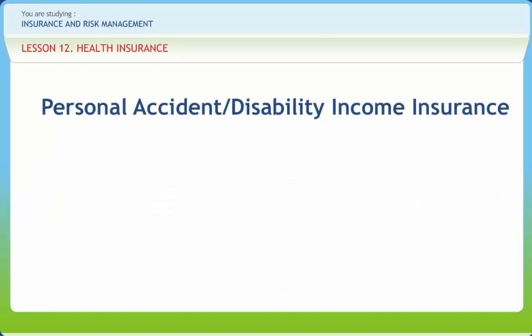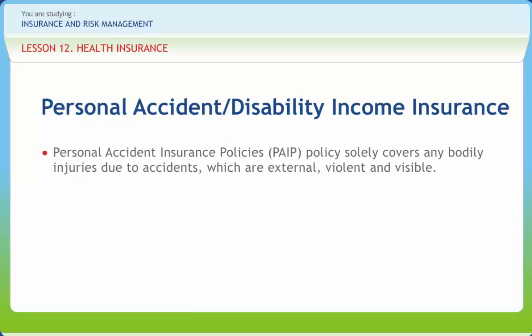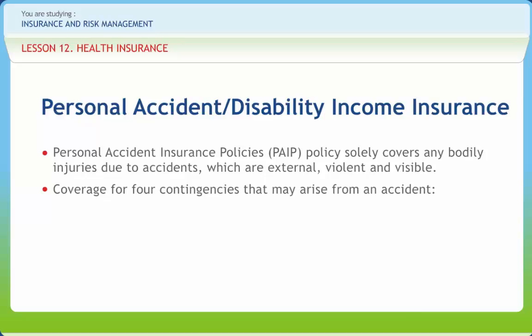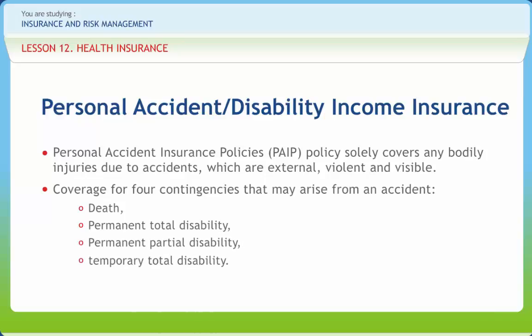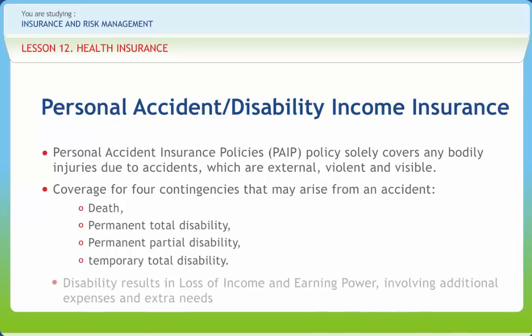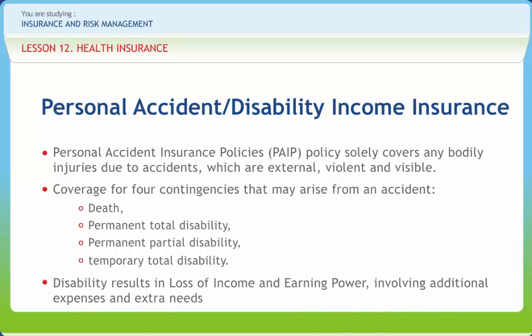In personal accident insurance, it is deemed that a person has unlimited financial interest in his own life. Personal accident insurance policies (PAIP) solely cover any bodily injuries due to accidents which are external, violent, and visible. Coverage extends to four contingencies that may arise from an accident: death, permanent total disability, permanent partial disability, and temporary total disability. Disability results in loss of income and earning power, involving additional expenses and extra needs.